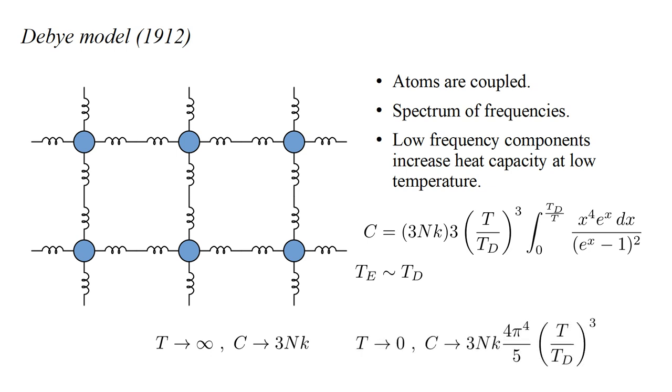In the low temperature limit, C behaves as three NK times four pi to the fourth over five times quantity T over T_D cubed. So heat capacity varies as T cubed near absolute zero.